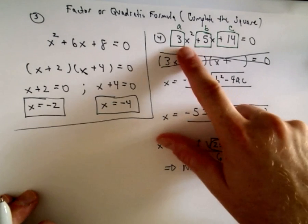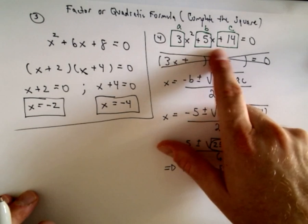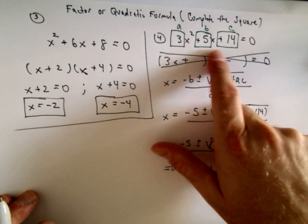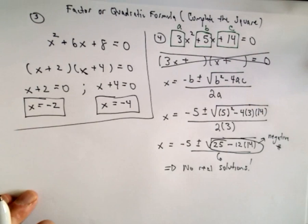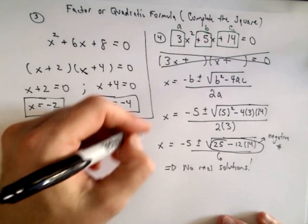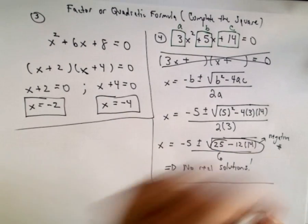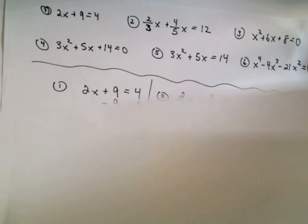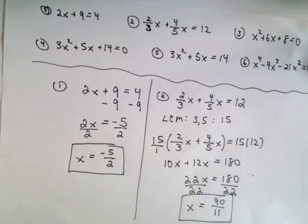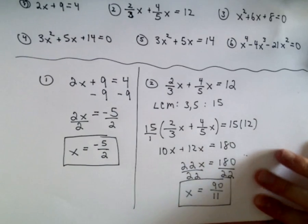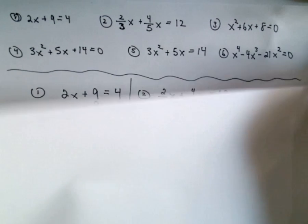There's no real number value we can substitute in for x and get zero as a solution. Of course you could use complex or imaginary numbers, but typically you don't see those in calculus — at least in the courses I've ever taught. So that was number 4 — two more to go.